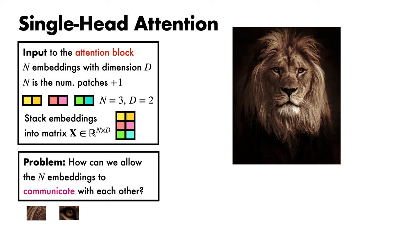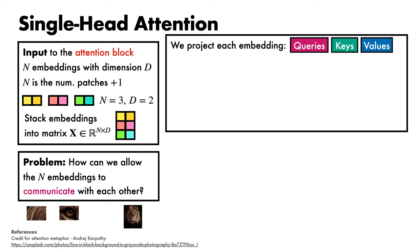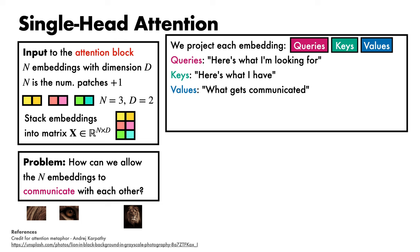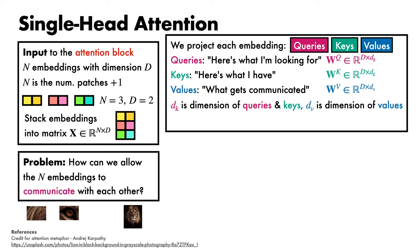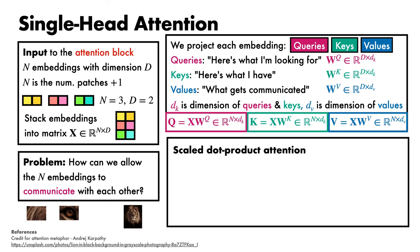The way we achieve this communication is by projecting each patch embedding three separate times to produce queries, keys, and values. The queries represent, roughly speaking, 'here's what I'm looking for'; the keys represent 'here's what I have'; and the values are what actually gets communicated. This is done by learning three matrices — one to produce the queries Q, one to produce the keys K, and one to produce the values V. Here, dk is the dimension of the queries and keys, and dv is the dimension of the values. We can then multiply the original embeddings X by Wq to get Q, by Wk to get K, and by Wv to get V.